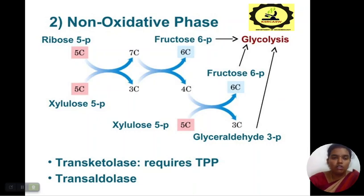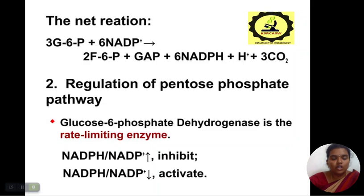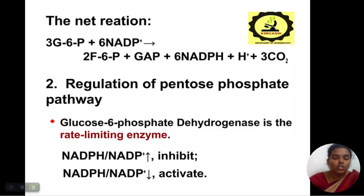There are two enzymes involved in the non-oxidative phase: transketolase and transaldolase. The net reaction of the pentose phosphate pathway is: 3 glucose 6-phosphate + 6 NAD⁺ gives 2 fructose 6-phosphate + GAP + 6 NADPH + H⁺ + 3 CO₂. The regulation involves glucose 6-phosphate dehydrogenase as the rate-limiting enzyme; it is inhibited and activated by NADPH.